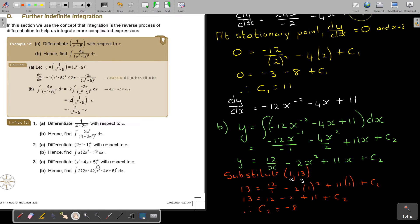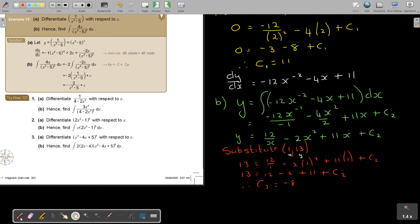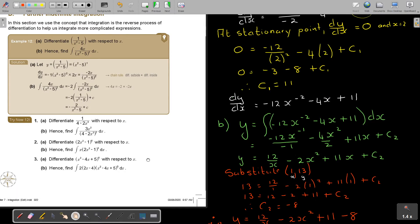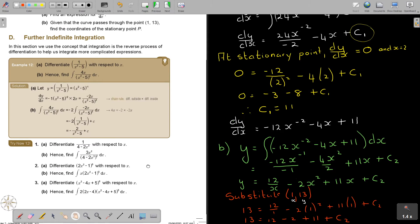So what is the equation going to be? y equals 12 over x minus 2x squared plus 11x minus 8. But now they said find the coordinate of the stationary point P.